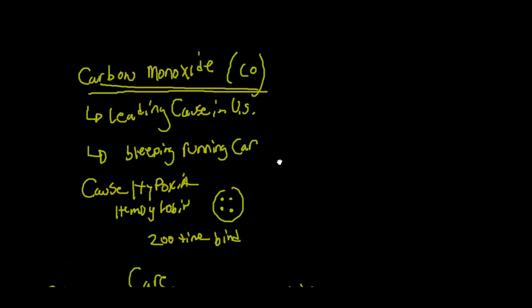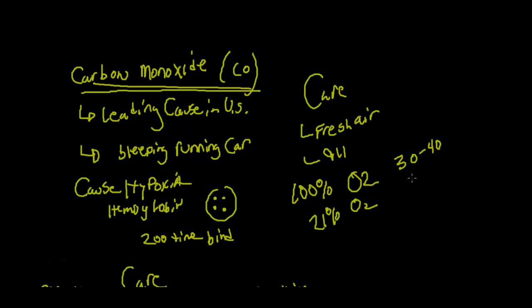And so the care you want to give to somebody, of course, is get them out into the fresh air. That's your first step. Fresh air, right off the bat. Call 911. You always want to call when you suspect carbon monoxide poisoning. Because what they're going to do is bring 100% O2, and that's going to speed up getting that CO2 out of their system. It might take about 30 or 40 minutes for somebody. And the normal percent of oxygen in the air is 21%, and that might take somebody four to five hours to recover, where you could be 30 or 40 minutes with 100% of oxygen. So that's why you always want to call.